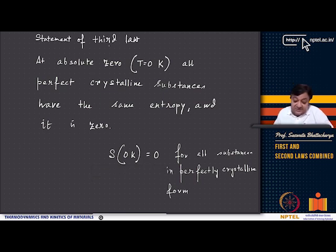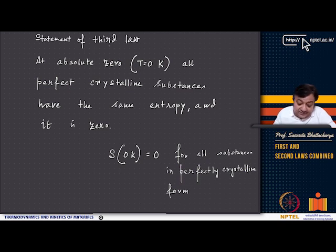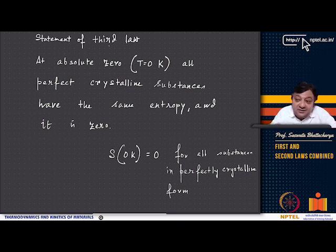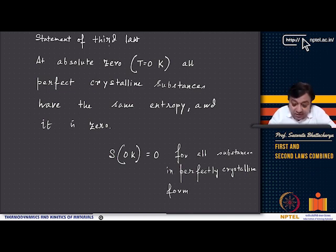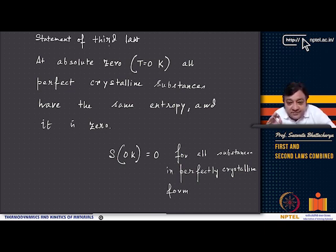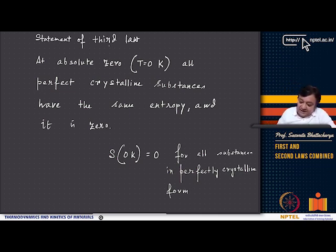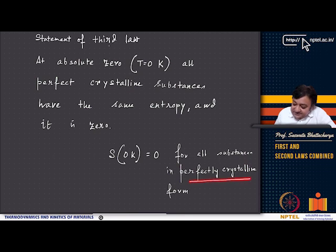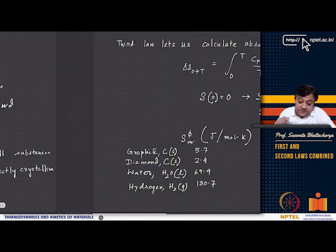We have defined the first law, second law, and third law. Recapping the statement of the third law: at absolute zero Kelvin, all perfect crystalline substances have the same entropy, and the value of that entropy is zero. So S at 0 K equals zero for all substances in perfectly crystalline form.